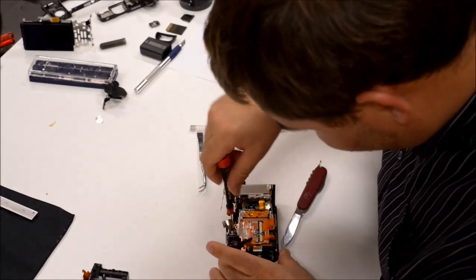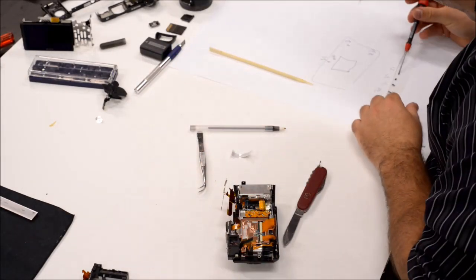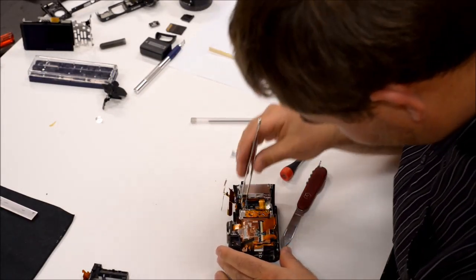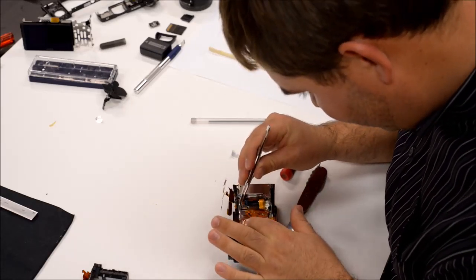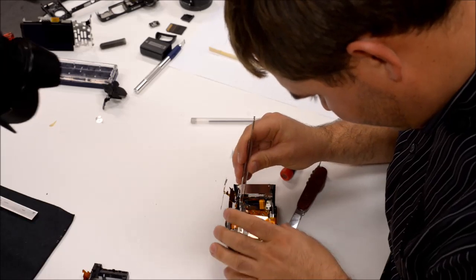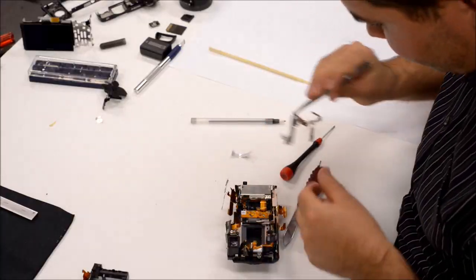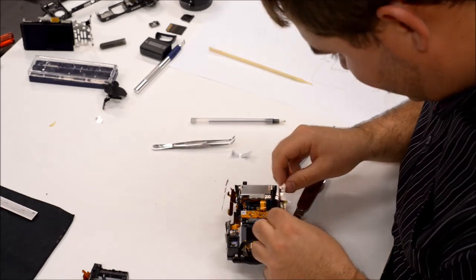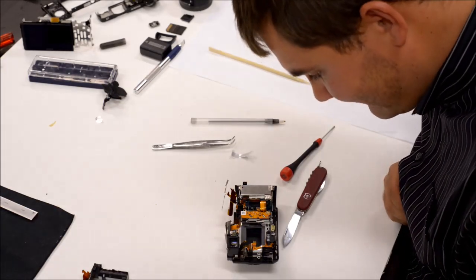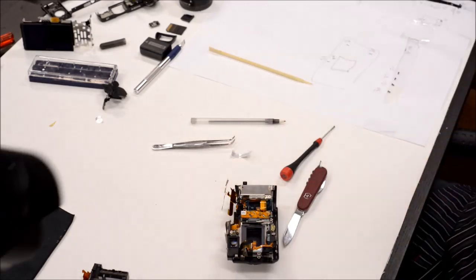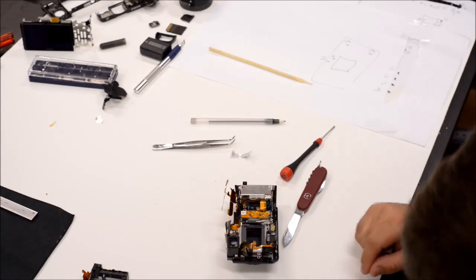And after that, there is three screws holding down the sensor. There is one on the bottom right, one sort of on the top and one on the top left. And they also have some shims underneath them that seat the sensor in the exact right position and pitch and stuff in the camera. And you really want to keep those in place and not lose them. And, well, just remove the screws and take the sensor out.